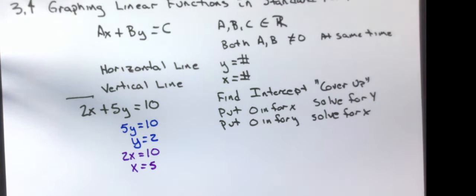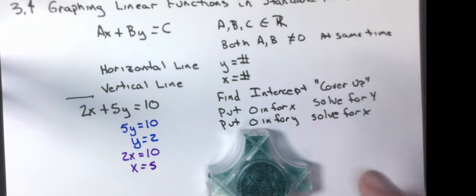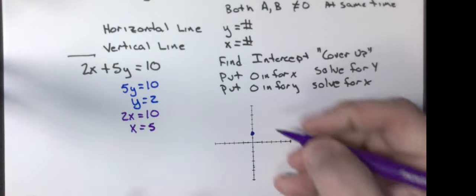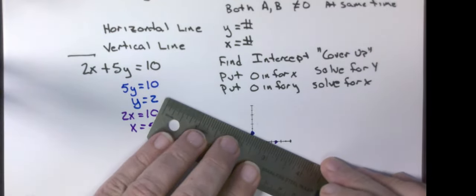If I were to graph that, I now have my X and Y intercepts. My Y is 2, my X is 5. And once you have those two intercepts, you connect them with a straight line.